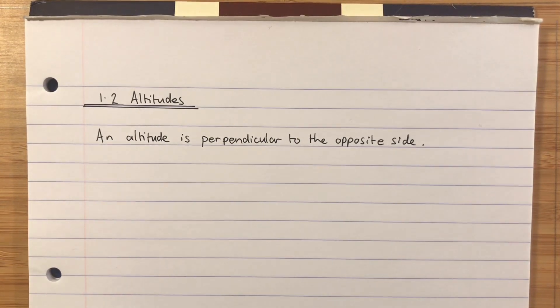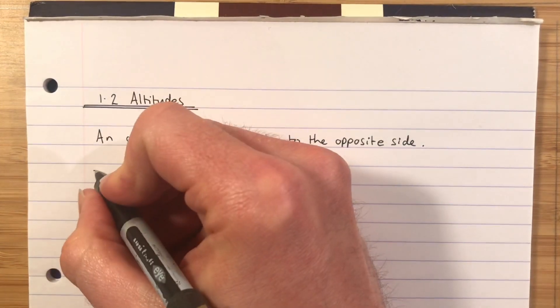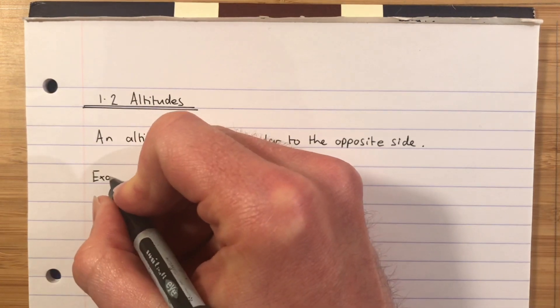So an altitude is always perpendicular to the opposite side. Straight into example 1.2a then.